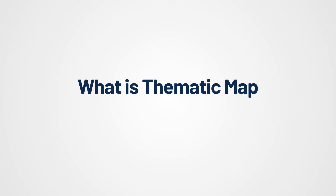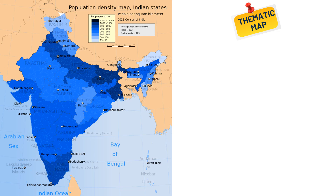What is a thematic map? A thematic map is a type of map specifically designed to highlight a particular theme or subject area related to a specific geographic region. It focuses on visualizing data and spatial patterns related to a specific topic or theme, such as population density, climate, economic activities, or health statistics. This focused approach makes them valuable for detailed analysis of specific issues.